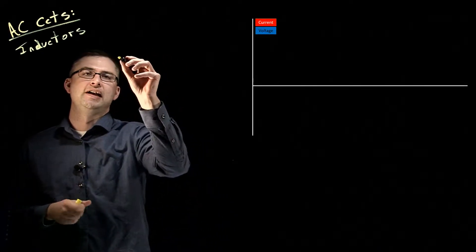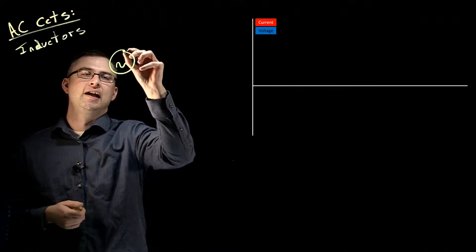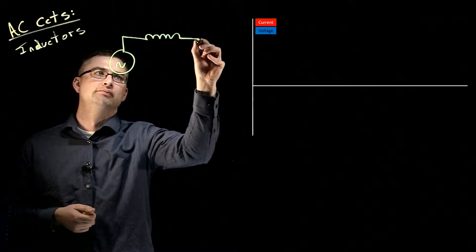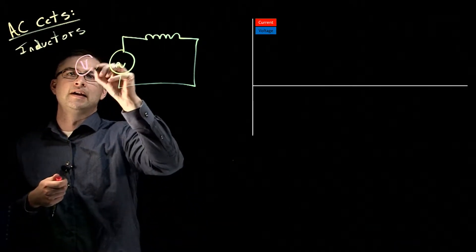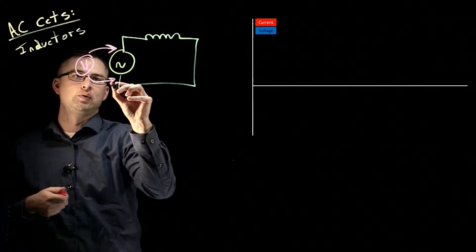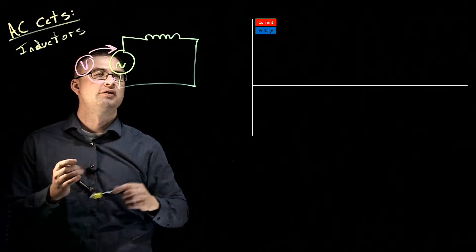So to draw out the circuit, we have an AC source and that is going to go to an inductor. What we're going to do is figure out the voltage of the source and the current that flows through the inductor.